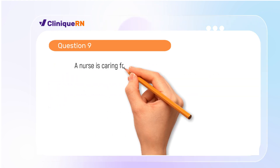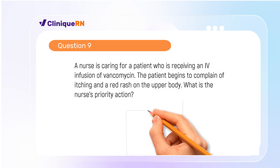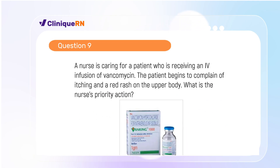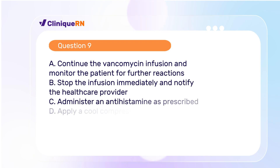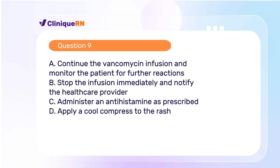Question 9. A nurse is caring for a patient who is receiving an IV infusion of vancomycin. The patient begins to complain of itching and a red rash on the upper body. What is the nurse's priority action? A. Continue the vancomycin infusion and monitor the patient for further reactions. B. Stop the infusion immediately and notify the healthcare provider. C. Administer an antihistamine as prescribed. D. Apply a cool compress to the rash.